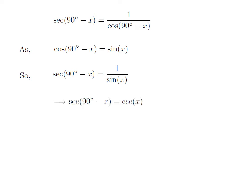As 1 upon sine x is equal to cosecant of x, so secant of 90 degree minus x is equal to cosecant of x.